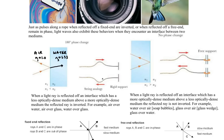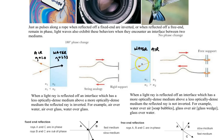If light goes in reverse — from water to air — traveling from a more dense to a less dense medium, there is no phase change. This is similar to a rope hitting a free-end support, where the pulse undergoes no phase change.